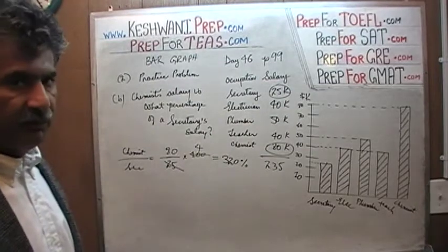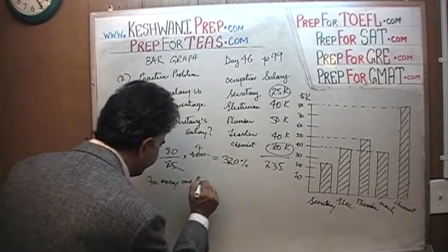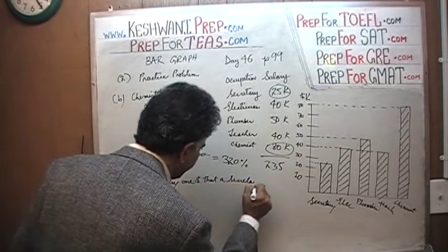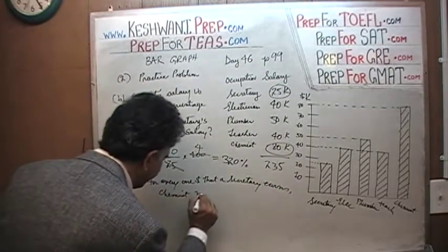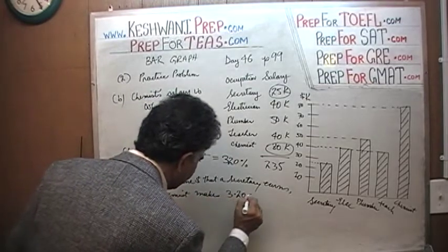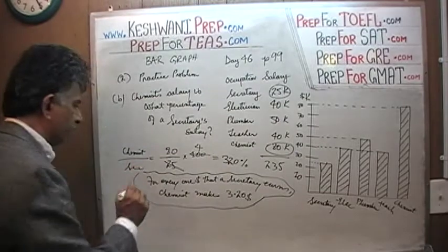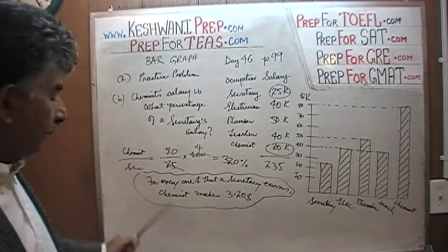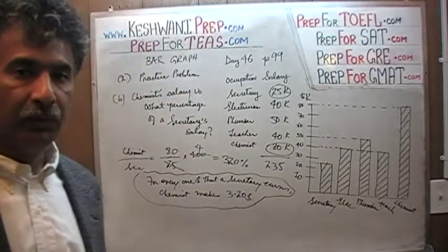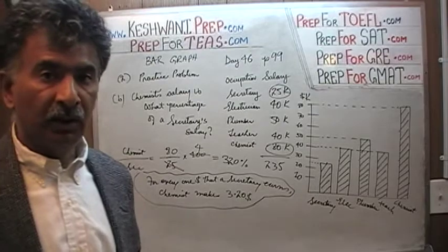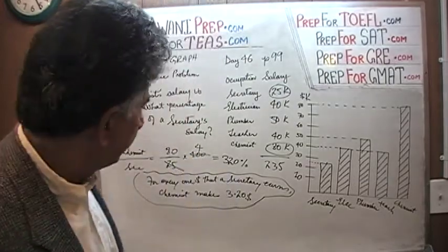So 320 percent is the answer. What does it mean? It means that for every one dollar that the secretary makes, the chemist makes three dollars and twenty cents. That's what 320 percent means. The ratio of their salaries is 3.2 to 1, or if you like, 32 to 10 — for every $32 the chemist makes, the secretary makes only $10. That was our second conclusion.